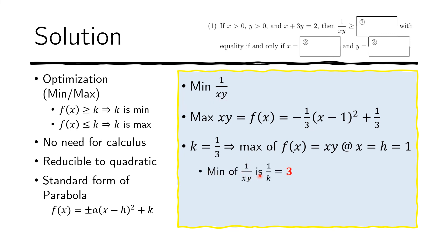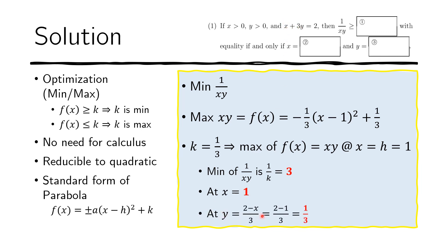The minimum of 1 over xy is 3, and this happens at x equals 1. Now that we have x, we solve for y by substituting x equals 1 into the constraint: y equals (2 minus 1) over 3, so y equals one third.